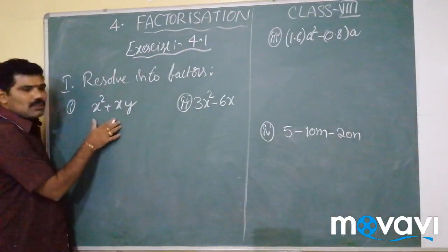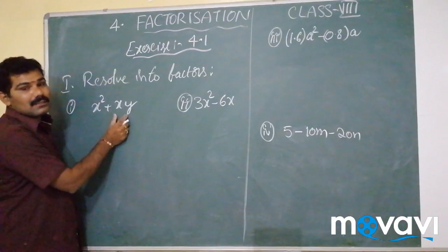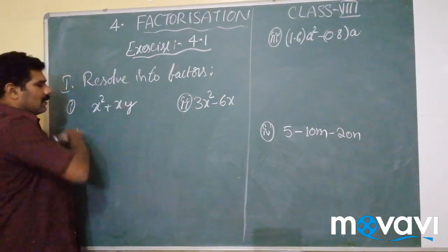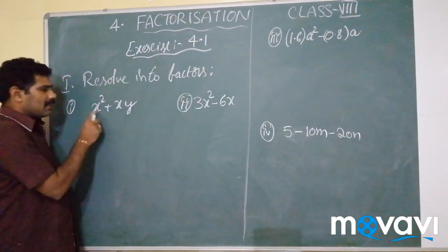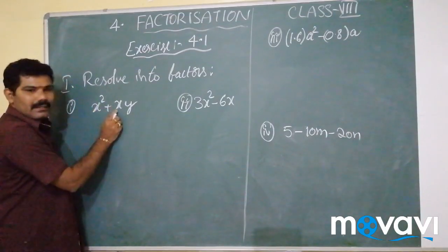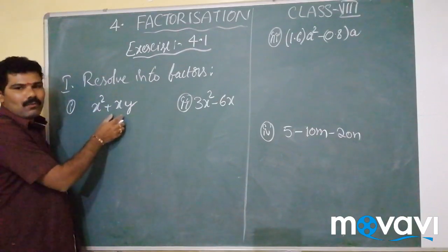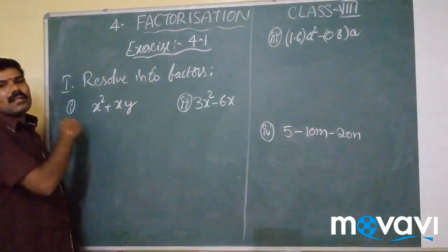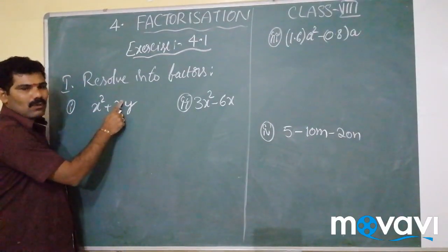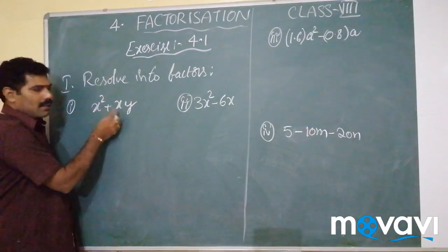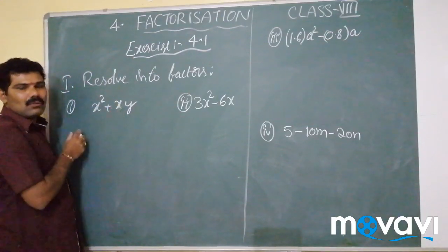In the first problem, x is the common factor in both terms — x in the first term and x in the second term. Now, x has power 2 in the first term and power 1 in the second term. We know that the lowest power has to be taken out. Since the lowest power is 1, we need to take x outside as the common factor.